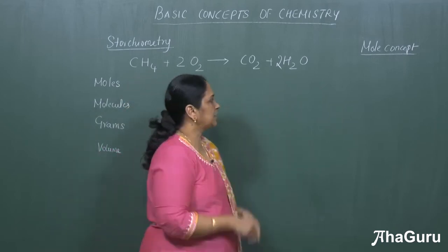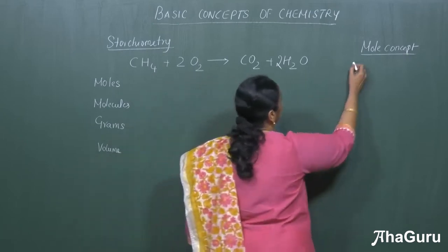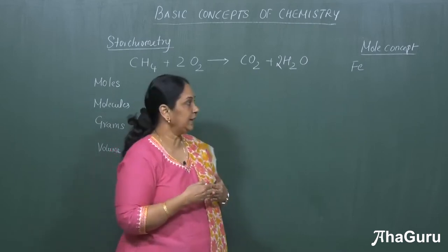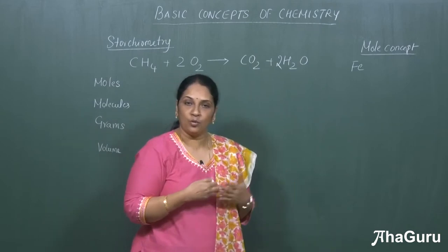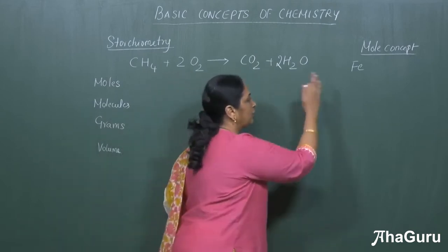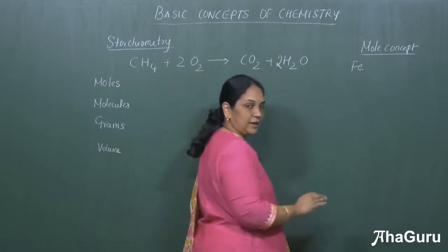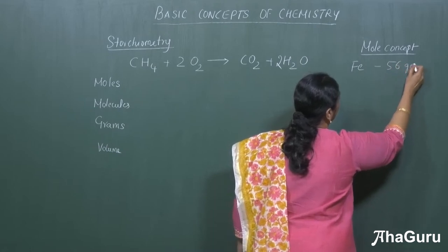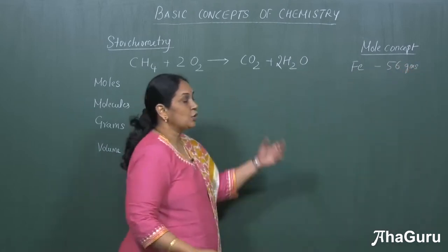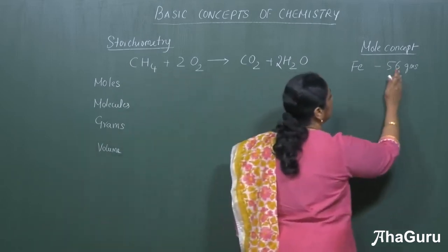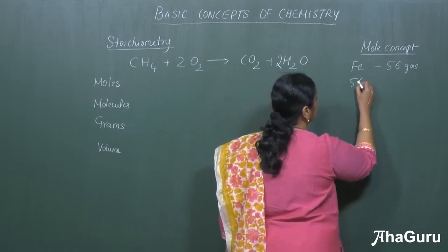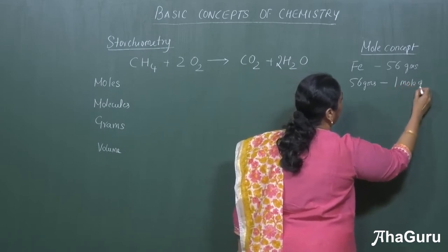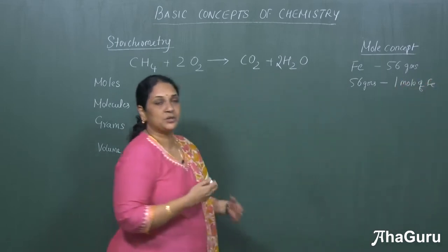What is the mole concept? Suppose I want iron — we won't ask for one kg or half a kg of iron. Instead, we say we want one mole of iron. To calculate that, you should know the atomic weight. The atomic weight of iron is 56, and atomic weight is expressed in grams. So one mole of iron is 56 grams — if I give you 56 grams of iron, that means I am giving you one mole of iron.